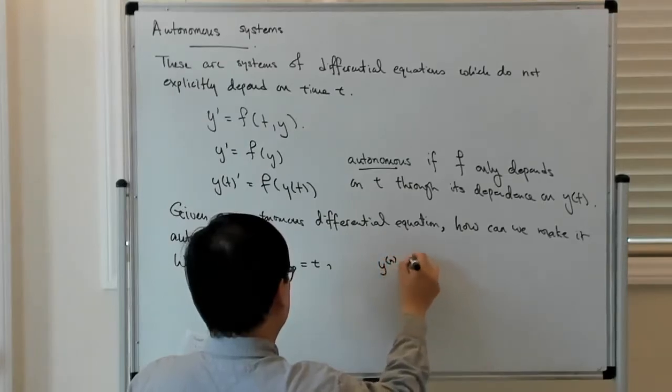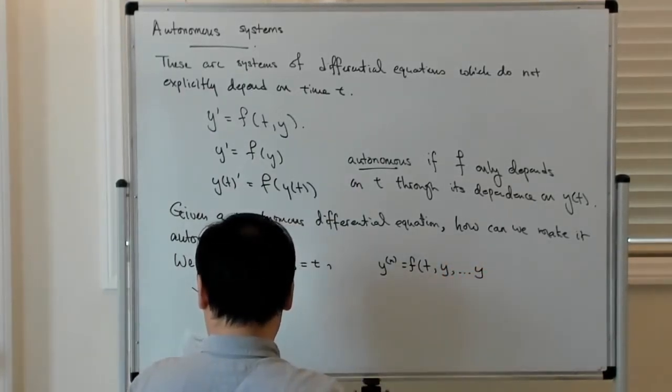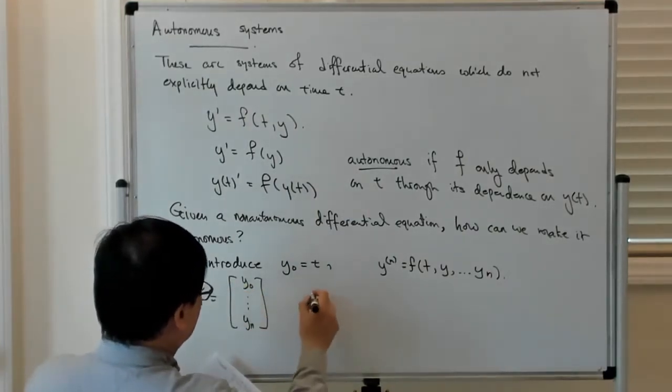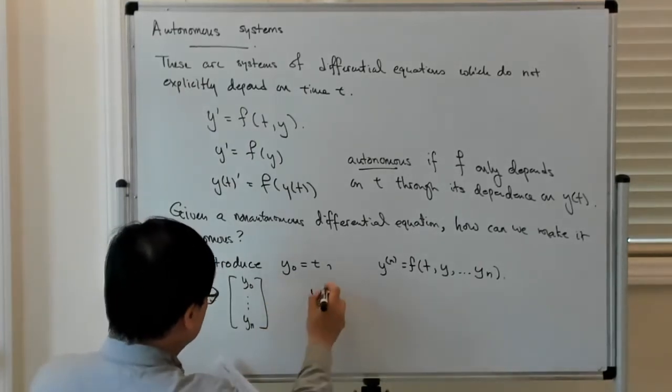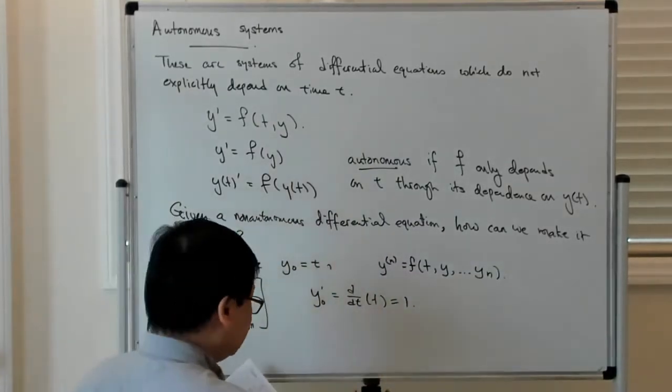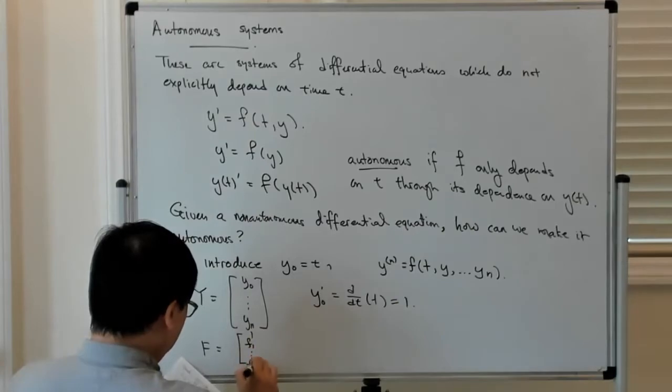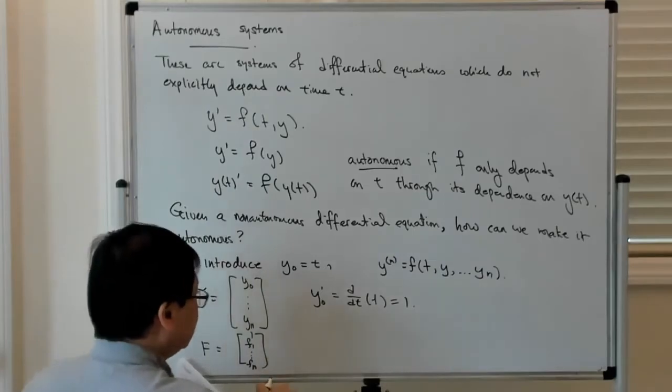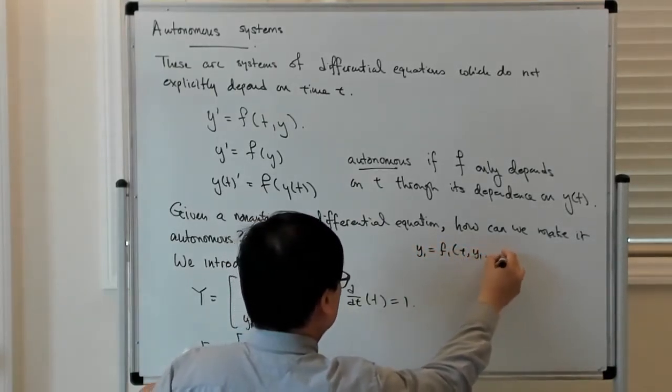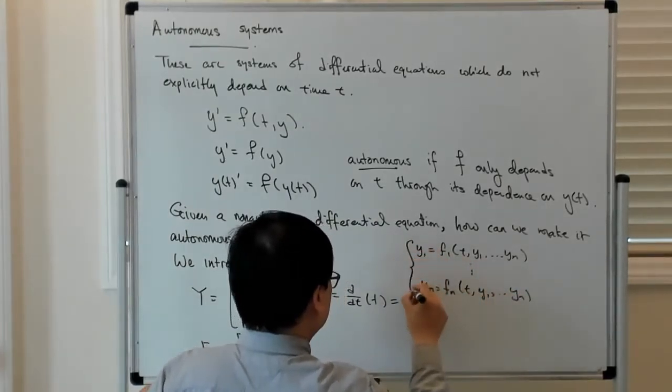So if you have, for example, yn derivative is equal to f of t, y1 all the way up to yn, then what I can do is add this y0. I have y1 prime equals f1 of t, y1 to yn, all the way up to yn prime equals fn of t, y1 to yn. So you have a system of equations like that.